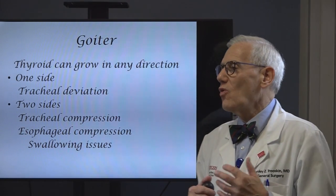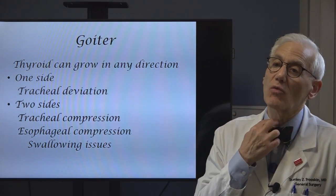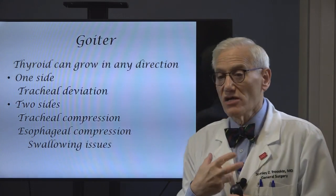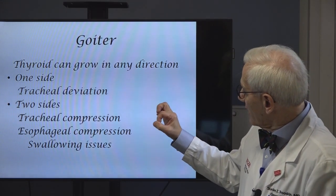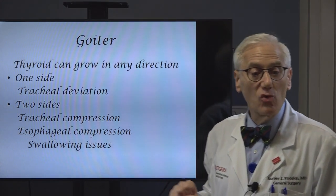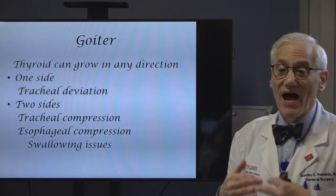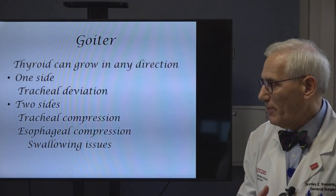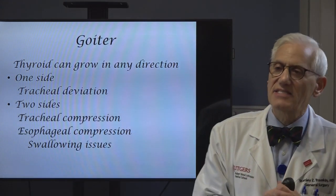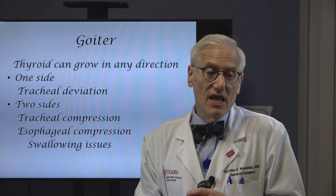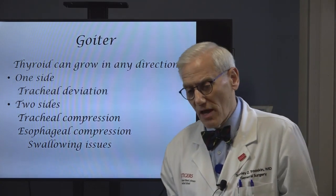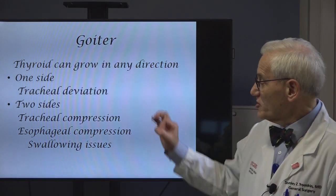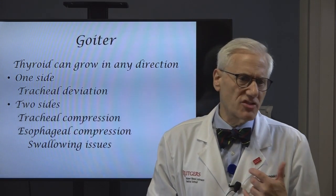Now the thyroid gland can grow in any direction. If one side gets large, one of the first things we're going to notice is that the windpipe gets pushed to the other side. If it gets big on both sides, it's going to start to press on the trachea. Normally in cross-section the trachea is a circle, but it will get compressed into an oval and eventually a slit by a large thyroid gland. Usually that takes a long time. People get used to it — a patient will come to the office, go from the chair to the examining table, and start to huff and puff. They notice a difference when we remove the thyroid because almost immediately the trachea opens up, becomes a circle again, and they say, 'Oh, I'm so much more comfortable breathing.'